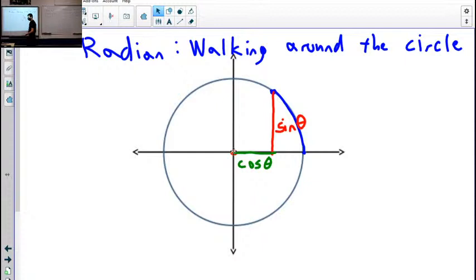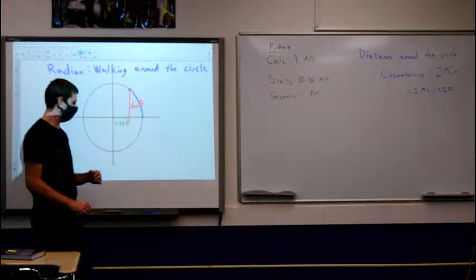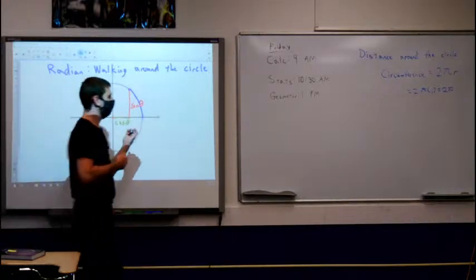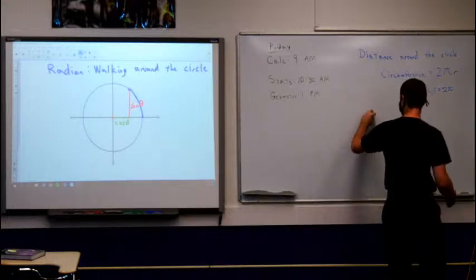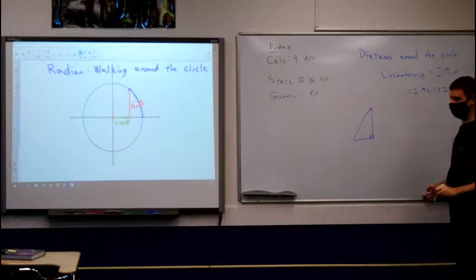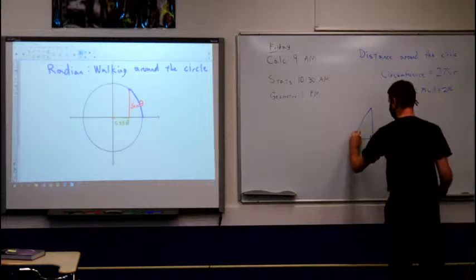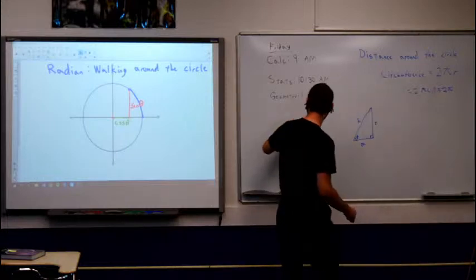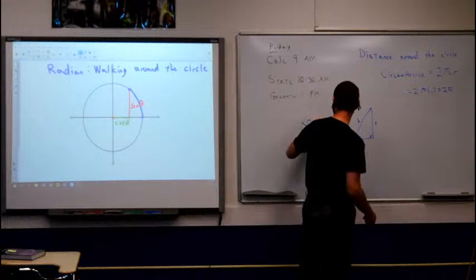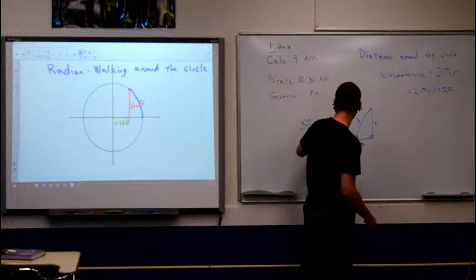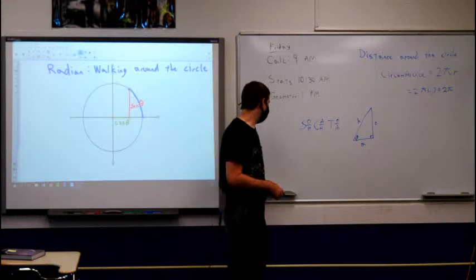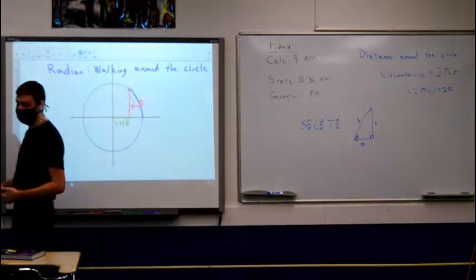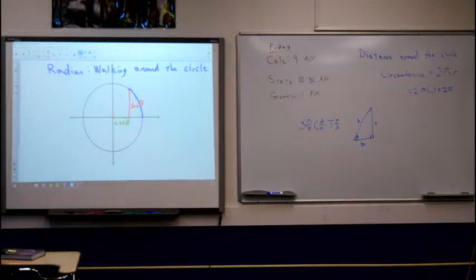But why triangles? Where do triangles come in? Well, we have two of the sides of the triangle, so let's talk about where the third side comes from. Let's go back to our geometry. We have an angle which we'll call theta, and we had an opposite, an adjacent, and a hypotenuse. And we came up with SOHCAHTOA to remember which trig ratio went with which length. Sine was opposite over hypotenuse, cosine was adjacent over hypotenuse, and tangent was opposite over adjacent.